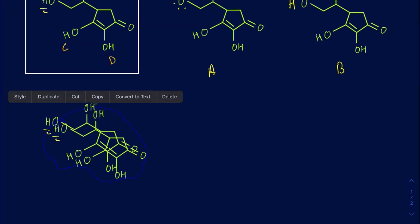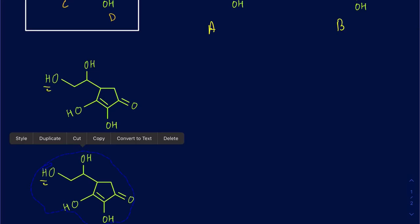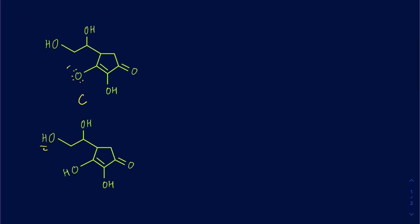I'll make another one for D as well. When I lose proton C, we'll get a negative charge here — that's structure C. And when I lose proton D, we'll get a negative charge on this oxygen here.